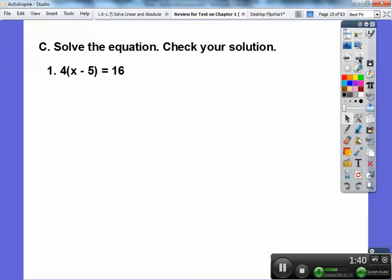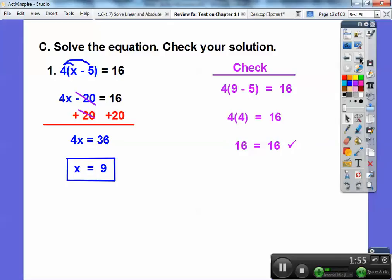Solve the equation, check your solution. So here, distribute the 4 through, 4x - 20 equals 16. Now we're going to add 20 to both sides and get 4x equals 36. Divide by 4, you get x equals 9. Don't forget it says to check your solution. So follow the directions. I'm going to plug in 9 right where I see x. So 9 - 5 becomes 4. 4 times 4 is 16. So 16 equals 16.